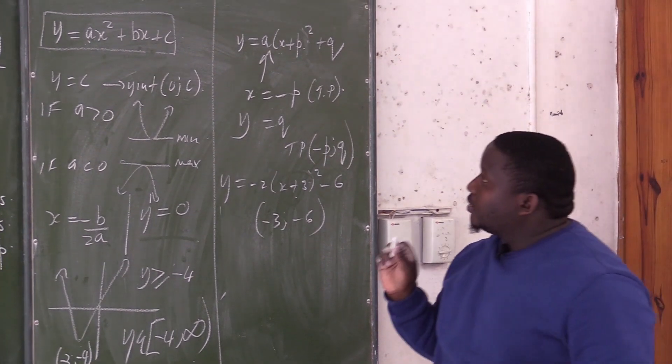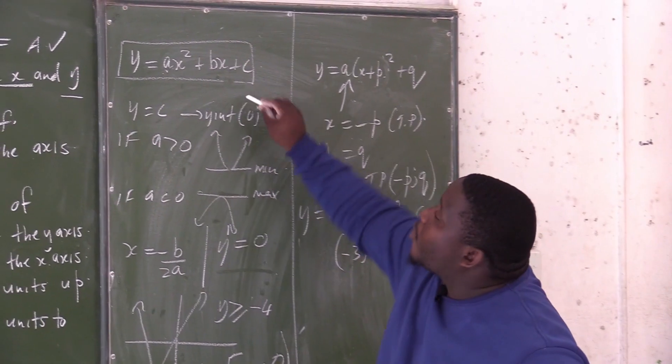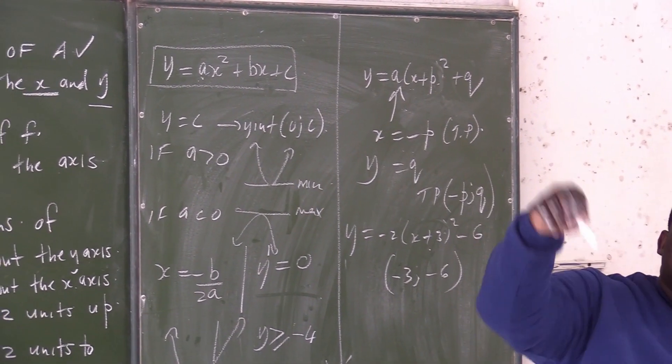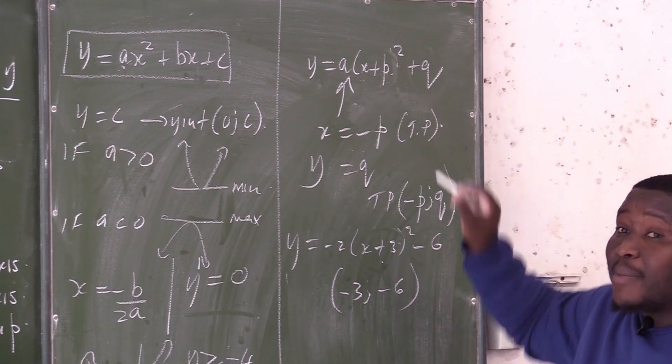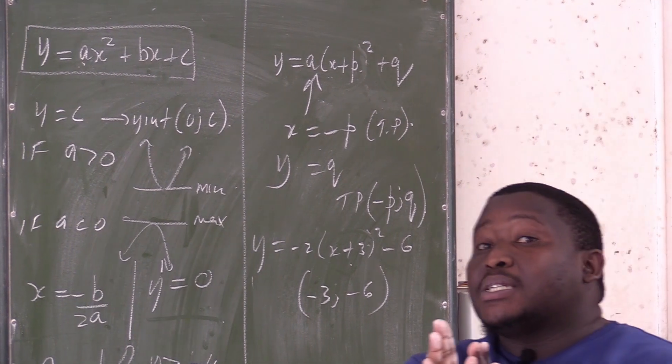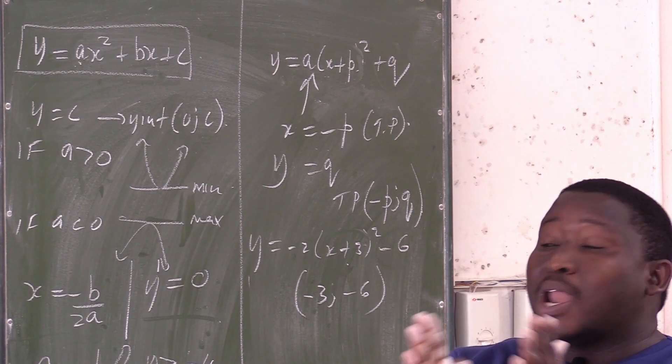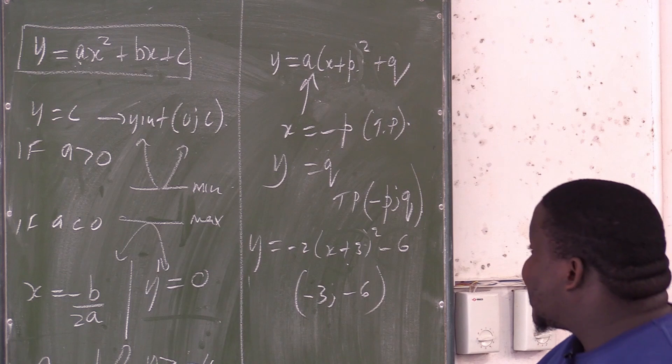Now, we have the parabola and we have the axis of symmetry. Remember, the axis of symmetry tries to divide your graph into two equal halves. It means here...